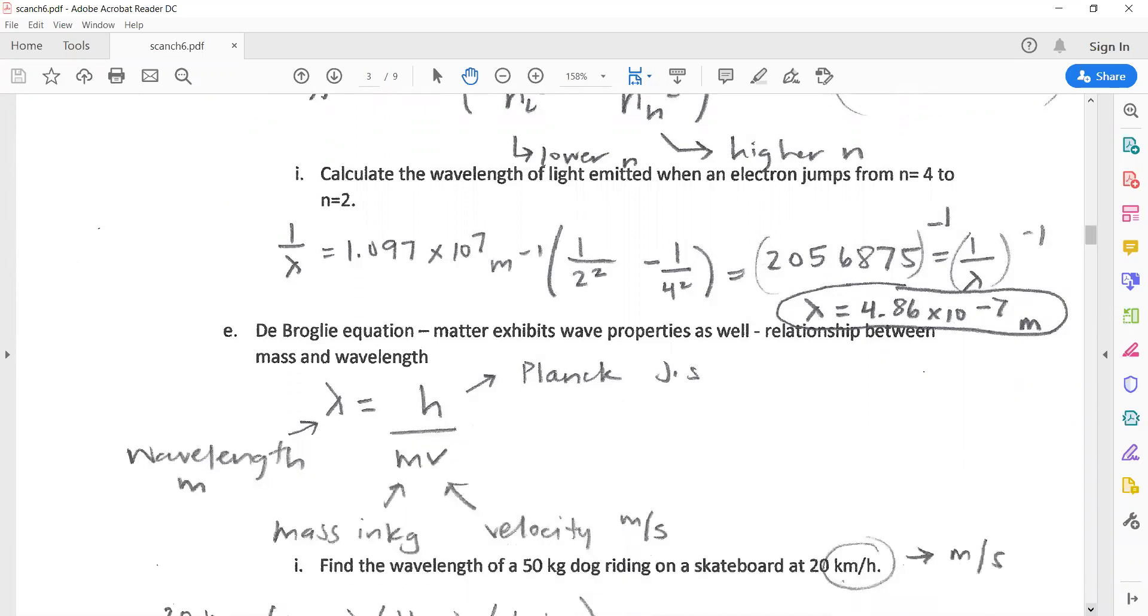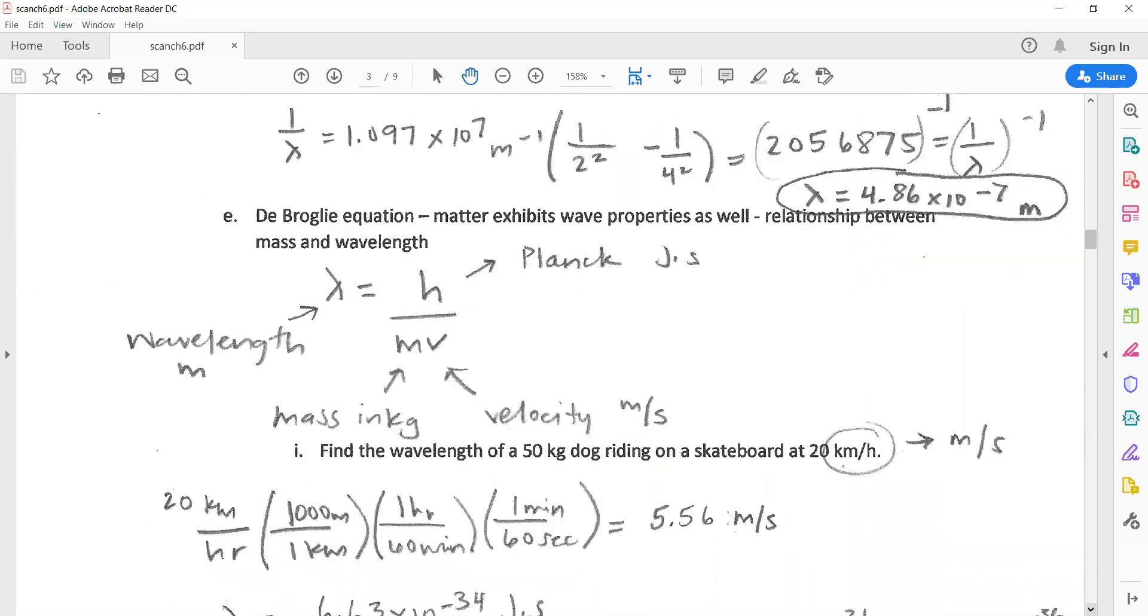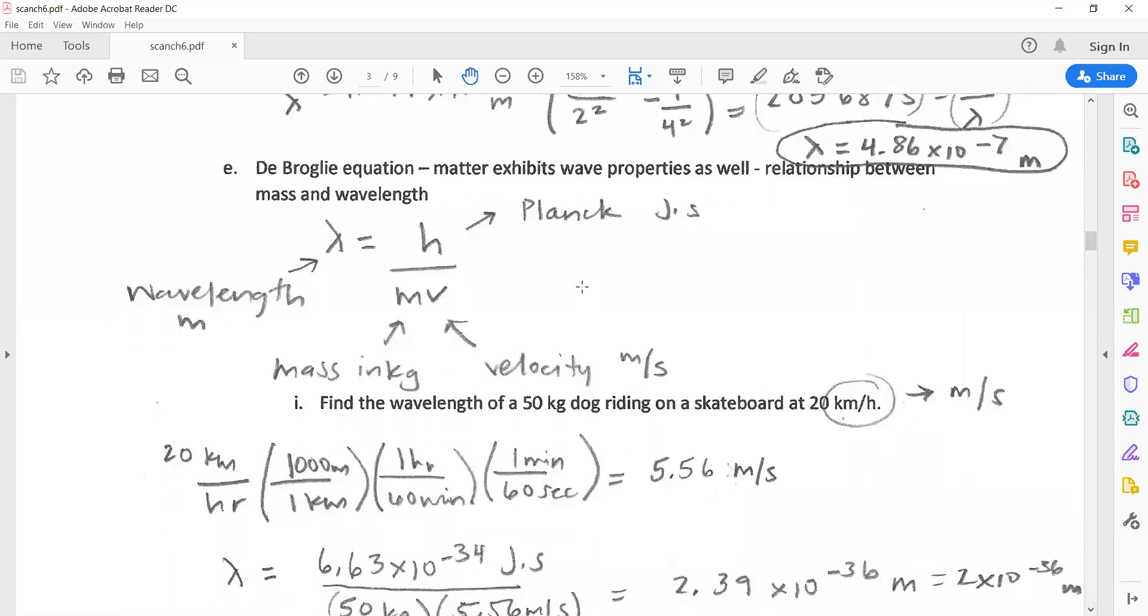We have one more equation called the de Broglie equation. What it's saying is that when objects move, such as electrons, they exhibit wave properties. The equation is lambda for wavelength equals h for Planck's constant over mass times velocity. It's determined by the object's mass and how quickly they are moving or spinning. The mass must be in kilograms and the velocity has to be meters per second.